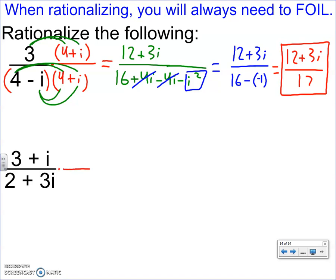So leave the bottom exactly the same, just change the sign. Instead of a plus 3I, it's a minus 3I. Same on top and bottom. We're going to have to FOIL. So I put some parentheses here. This one has FOIL in both on top and bottom. That's okay.